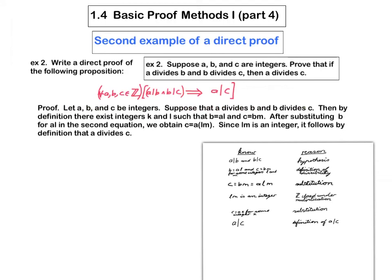Now we go to the table to produce our sequence of statements that we're going to use. This one is used here. We say, then by definition, there exist integers K and L such that B equals AL and C equals BM. And now we make use of this line here to say, after substituting B for AL in the second equation—so you see I've substituted this B by AL in this equation—we obtain C equals ALM.